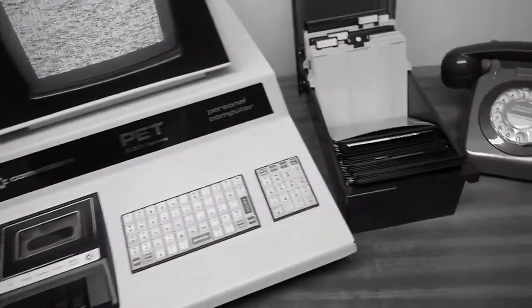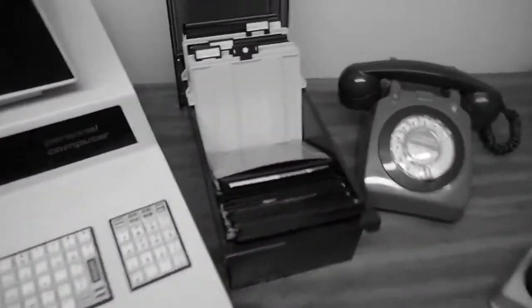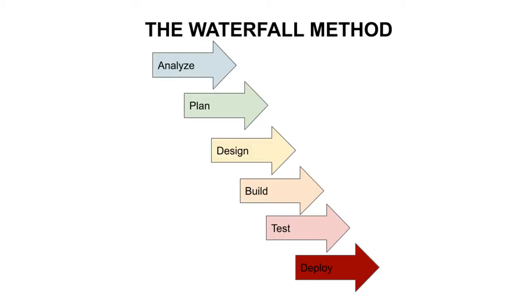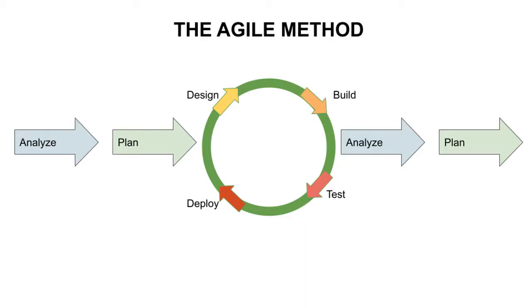Agile is a method of delivering software incrementally. This differs from the olden days when companies used to use the old waterfall method to front load all of their planning. Agile gives you the ability to respond to changing requirements instead of just getting locked into something that's hard to change.